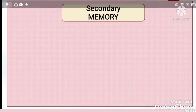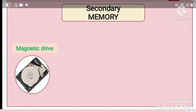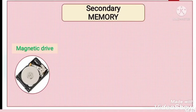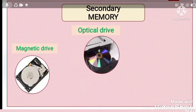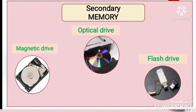Now I will talk about secondary memory. Secondary memory is of three types: one is magnetic drive, another one is optical drive, and the last one is flash drive. Part by part, we will discuss all the types.